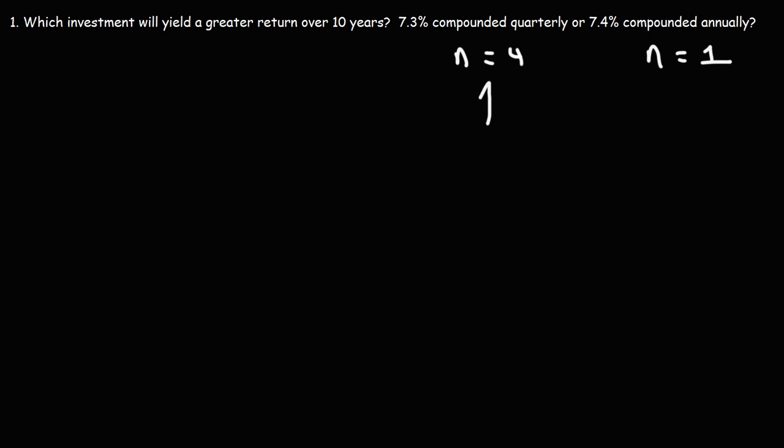Because you're going to receive your interest payments earlier when it's compounded quarterly, you can have the potential of having interest upon interest. So typically, when N is higher, that leads to a greater return. But is it enough such that this will be higher than that? Let's find out.